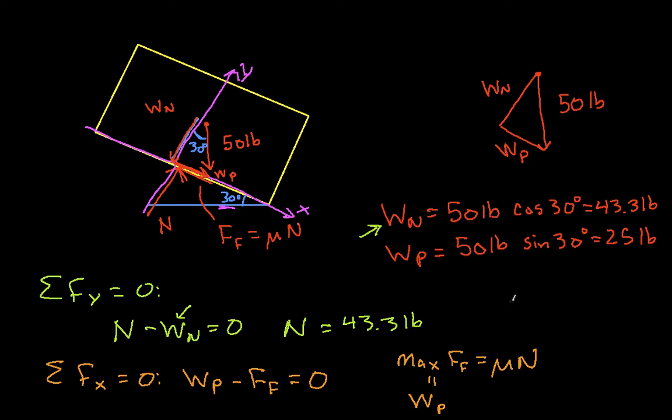So if we basically then set W P equal to mu times N, we know what N is. We know what W P is. So we can write this as W P, which is 25 pounds, is equal to mu times N, which is 43.3 pounds. When we solve this for mu, we get mu is equal to 0.578.